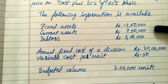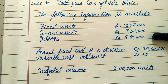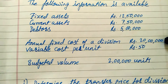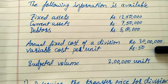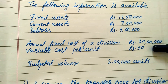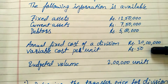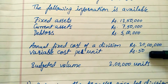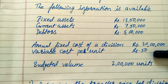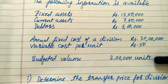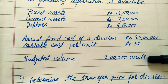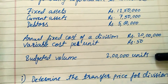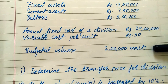Current assets are ₹7,50,000 and debtors are ₹5,00,000. The annual fixed cost of the division is ₹20,00,000 in total — to get the cost per unit we'll divide by the number of units. The variable cost per unit is ₹50. The budgeted volume is 2,00,000 units for the whole year, and all the above costs are on the basis of 2,00,000 units.